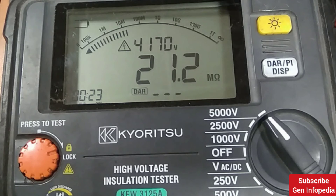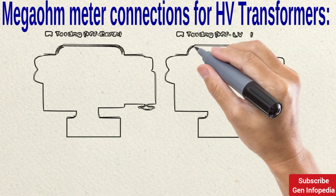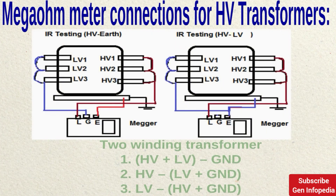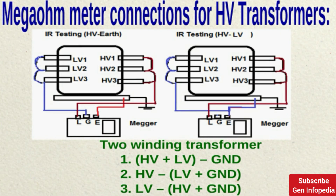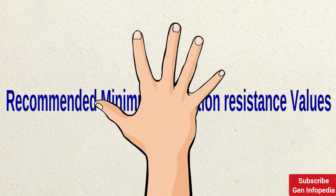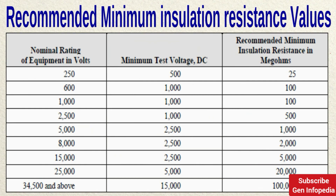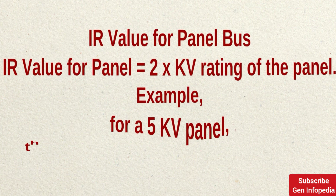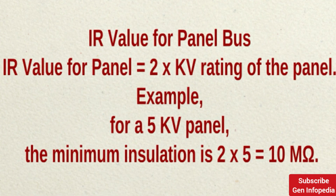You will see readings showing the insulation resistance value. These connections also apply when measuring insulation resistance for high voltage transformers — the first picture shows connections for HV to earth, and the second shows HV to LV. There are recommended minimum insulation resistance values based on equipment voltage ratings. For example, for 250 V equipment, the minimum test voltage is 500 V DC and the recommended minimum IR value is 25 MΩ. For panel busbars, the formula is: minimum IR (MΩ) = 2 × kV rating of the panel. For a 5 kV panel, that is 2 × 5 = 10 MΩ minimum.